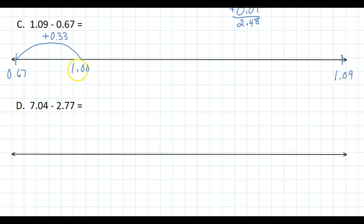Now I'm going from 1.00 to 1.09. It's actually quite a small hop, but I'm going to have to draw it. It's actually only 0.09, but it's quite a big hop on the diagram.